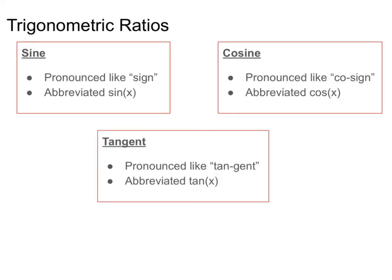Now we are going to set up trigonometric ratios, but first we need to discuss what those ratios are. The first is sine, pronounced like a stop sign, and abbreviated as sin. The next is cosine, pronounced cosine, abbreviated as cos. And the last one is tangent, pronounced tangent and abbreviated as tan.